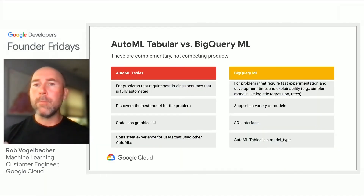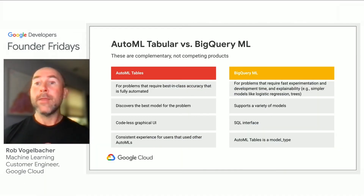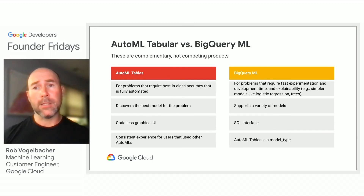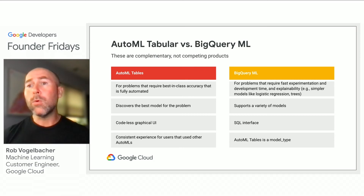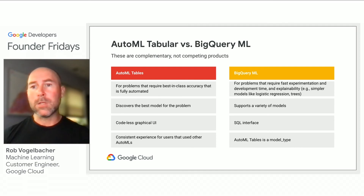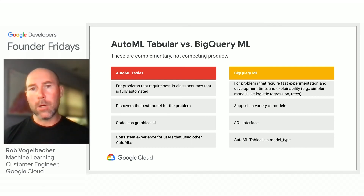We see AutoML and BigQuery ML as complementary technologies that open up avenues for building machine learning models without heavy custom development. And for those organizations who are building custom models, both AutoML and BigQuery ML are additional tools in your toolbox that can help you acquire and retain customers by easing the burden to produce high-quality and well-performing ML models without extensive code.